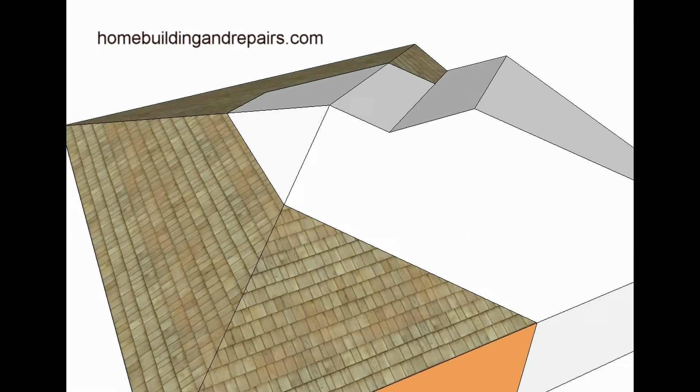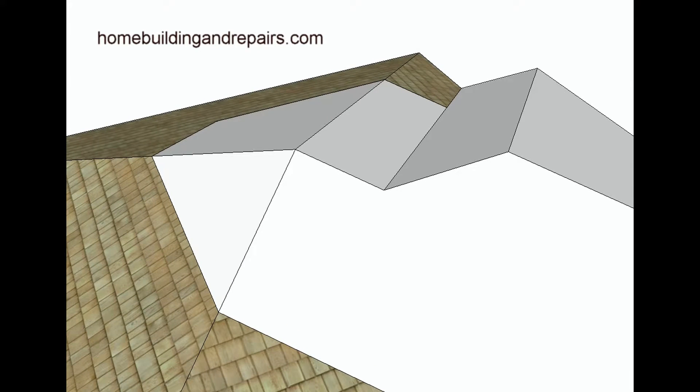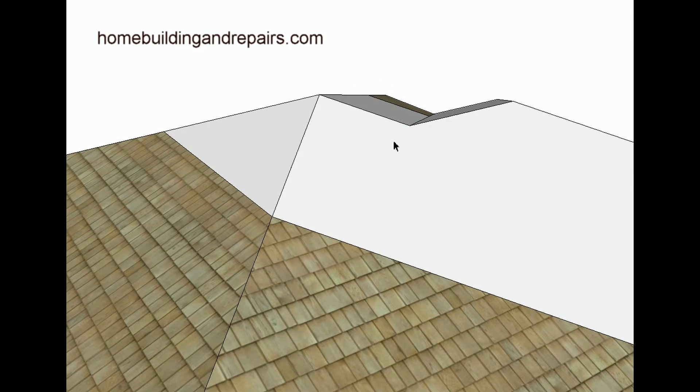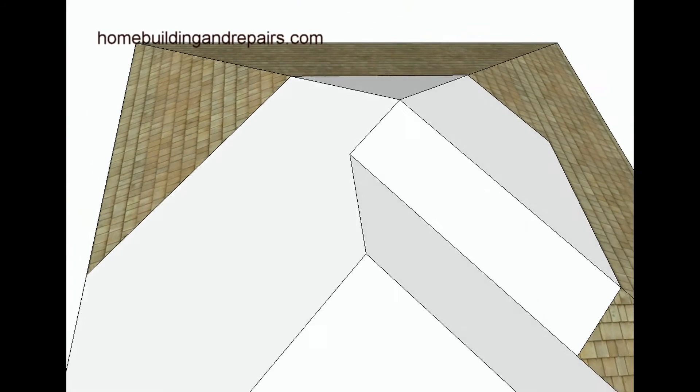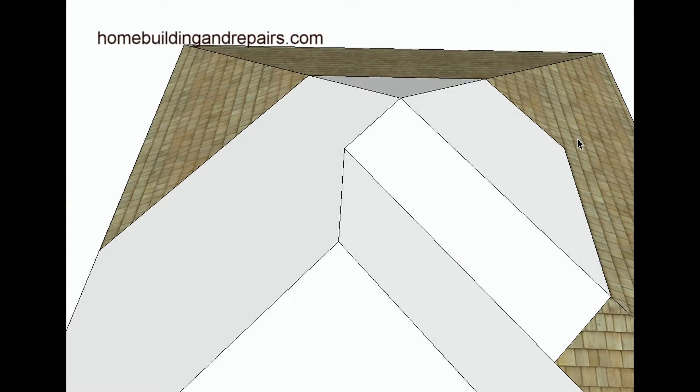And I hope this makes sense. And again, I'm not showing you how to build the roof. This is strictly for a design idea for those of you who are having a difficult time getting a concept of what the roof would look like. So there you go. We would have a plane. This would be a flat surface right here. Flat surface.